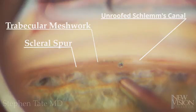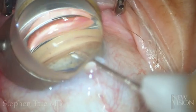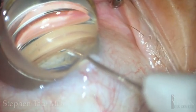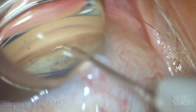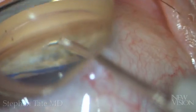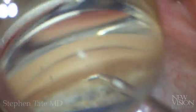Step four is device injection. Once the scleral spur and ciliary body band have been identified, the device being used is deployed through the trabecular meshwork into Schlemm's canal.